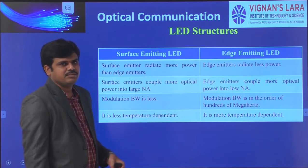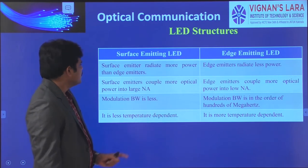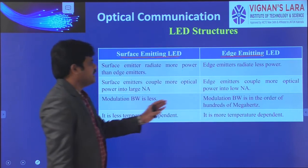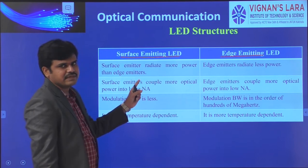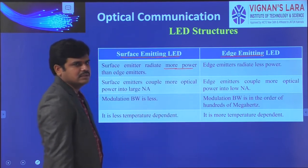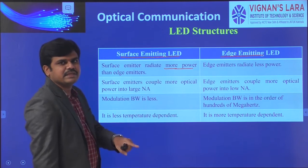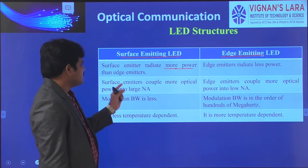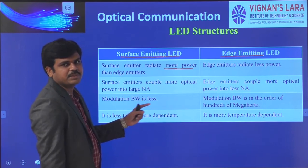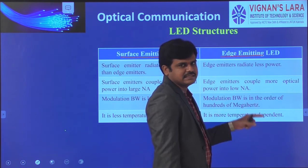Today we will discuss some differences between the two LEDs. The first point: compared to edge emitting LED, surface emitting LED radiates more power. The second point: surface emitter LEDs couple more power into large numerical aperture optical fibers, whereas edge emitter LEDs couple more optical power into optical fibers having less numerical aperture.